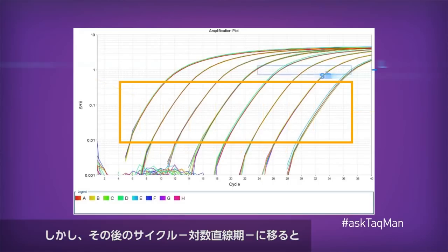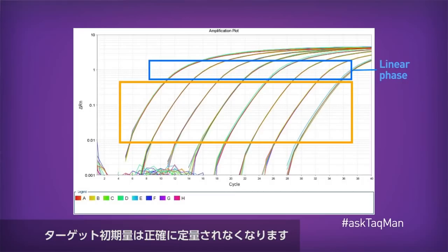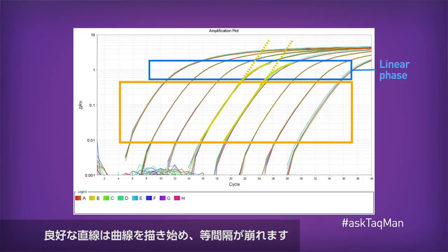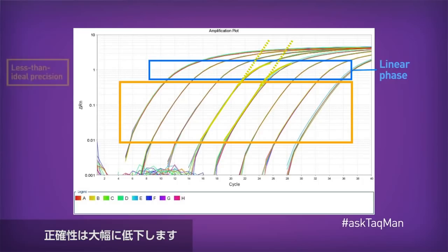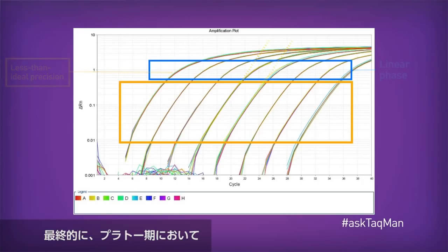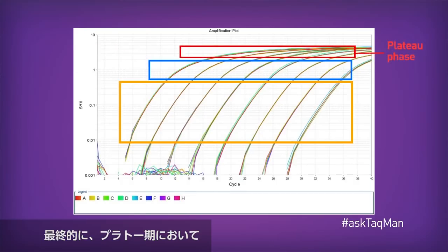But as the reactions move into the later cycles — the so-called linear phase — that predictability starts to go away. Our nice straight lines begin to curve, totally messing up the even spacing. And the precision drops off considerably. Finally, in the latest cycles, also known as the plateau, the data all merge together.